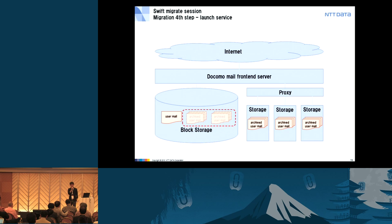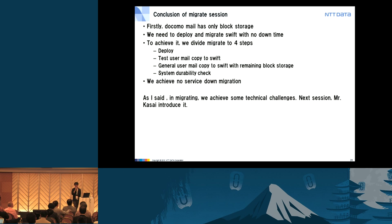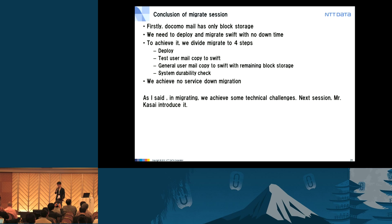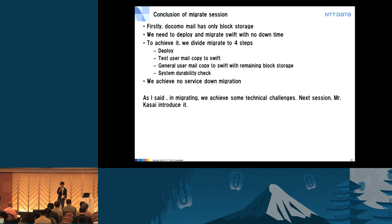After New Year's Day, Swift cleared this durability check, and we decided to remove archived user mail from block storage and start Swift service. This completed all migration steps. In conclusion: Docomo Mail initially had only block storage; we needed to deploy and migrate Swift with no downtime. To achieve it, we divided migration into four steps: deploy and copy test users' mail to Swift; copy general users' mail to Swift while retaining block storage; and finally, system durability check. After this migration, we achieved no-downtime migration. Next, Mr. Kasai will introduce the technical challenges we encountered.